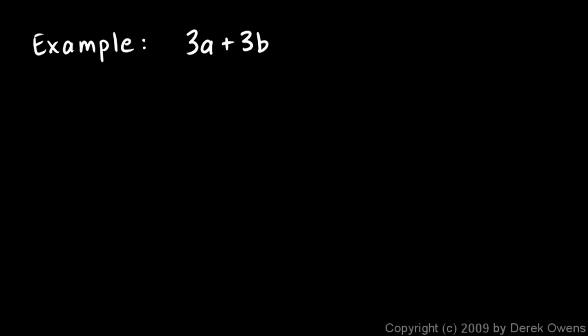In this example, we're given the polynomial 3a plus 3b, and we're told to factor it. Well, each term has a 3 in it, and that 3 can be factored out. We could write this expression as 3 times (a plus b). And you can see we have two factors now, the 3 and the (a plus b). If we were to multiply those together, that would give us the original polynomial.